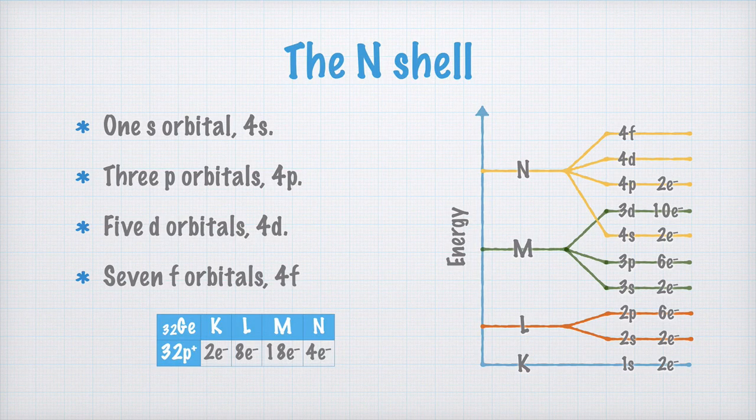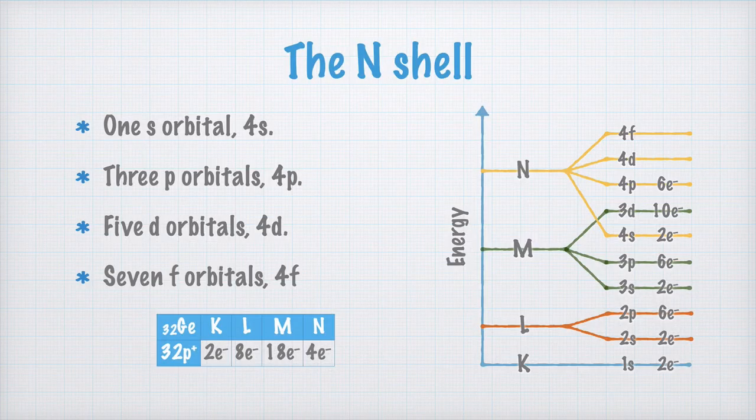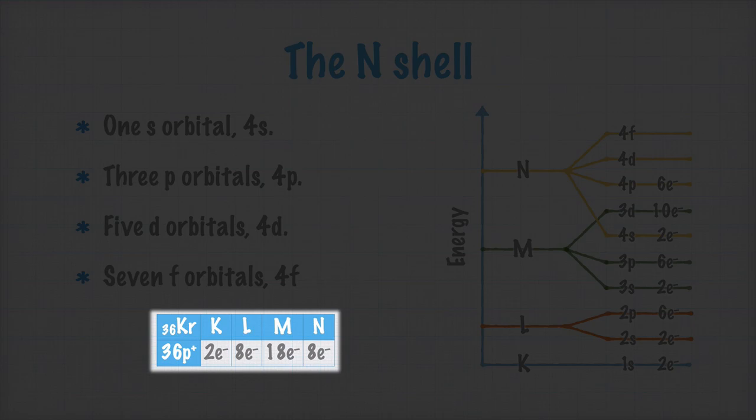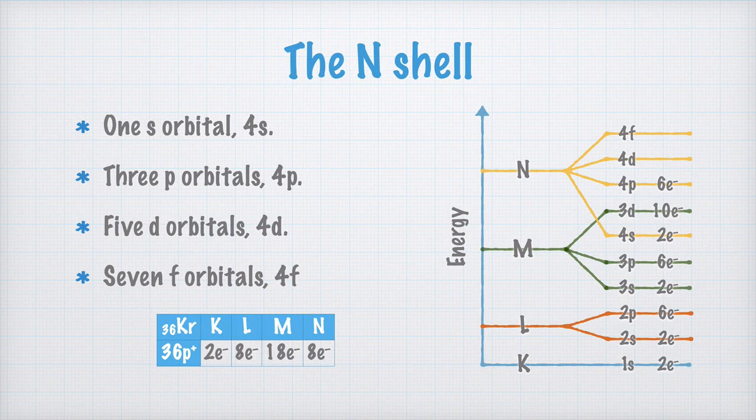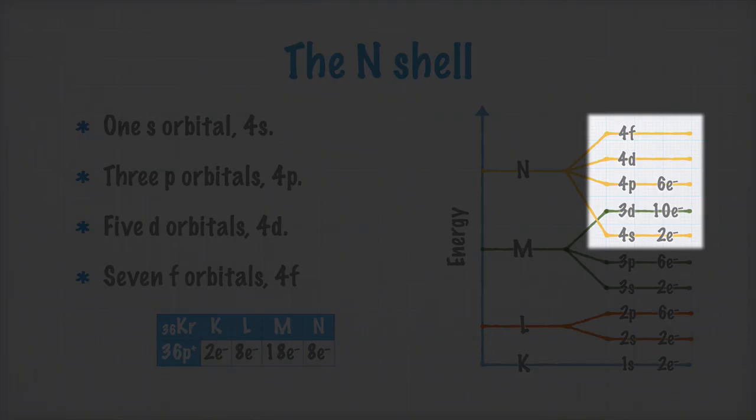As you hopefully remember, there are three 4p orbitals, so they may contain six electrons at most. This is the electron configuration of krypton, yet another noble gas. As you can see, it has eight electrons in its N-shell. Now, since there are five 4d orbitals, there may be another 10 electrons there, and since there are seven 4f orbitals, yet another 14 electrons may be there.